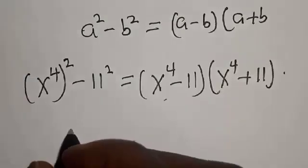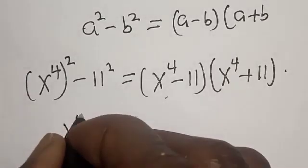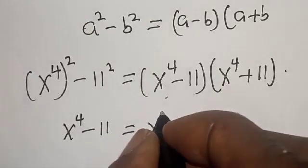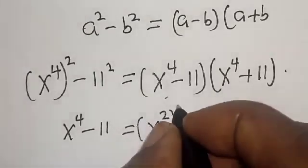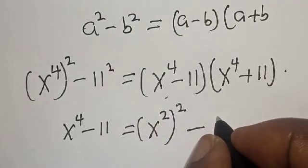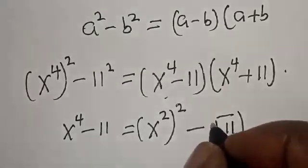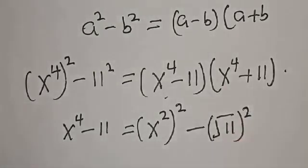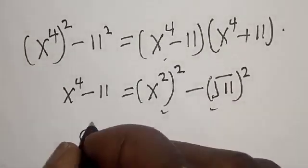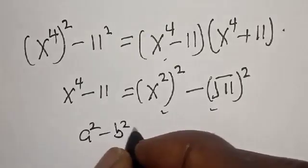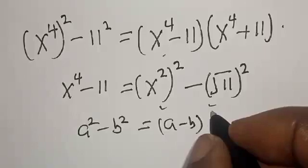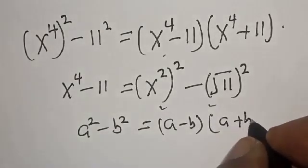Now let's look at the factor x to the power 4 minus 11. This can be written as x squared, squared, minus the square root of 11, squared. This is also a difference of two squares: a squared minus b squared equals a minus b multiplied by a plus b.